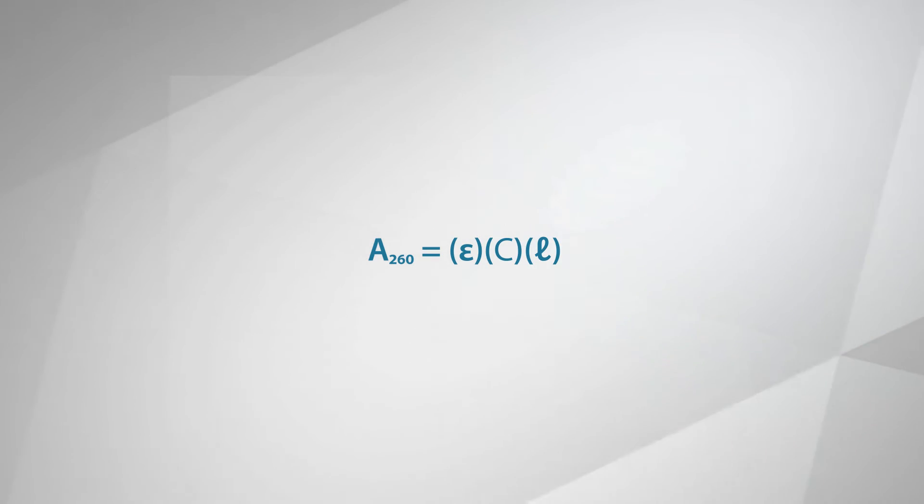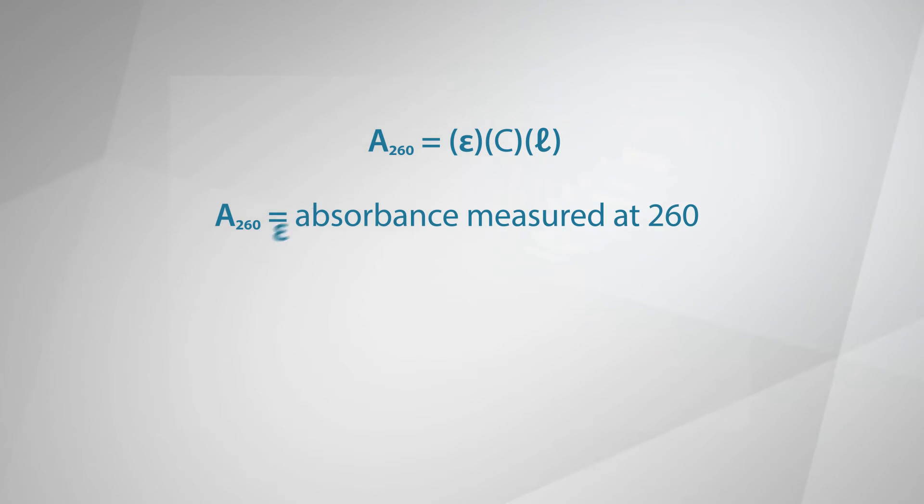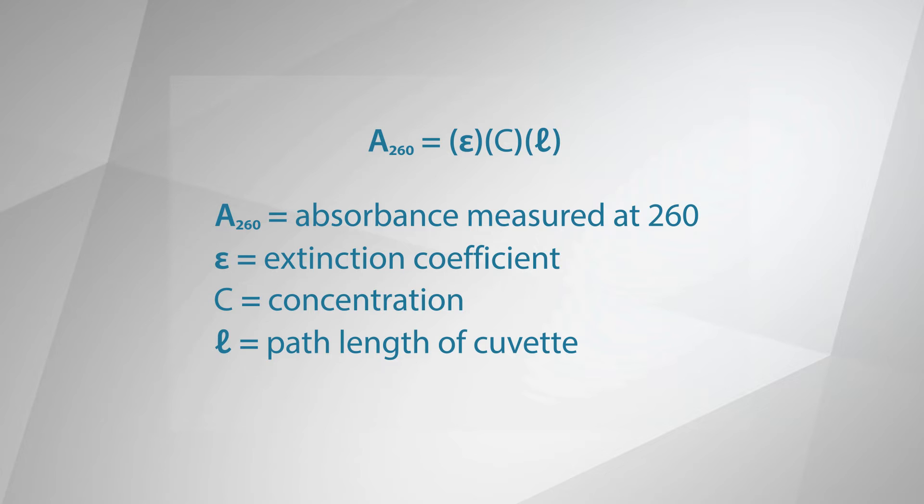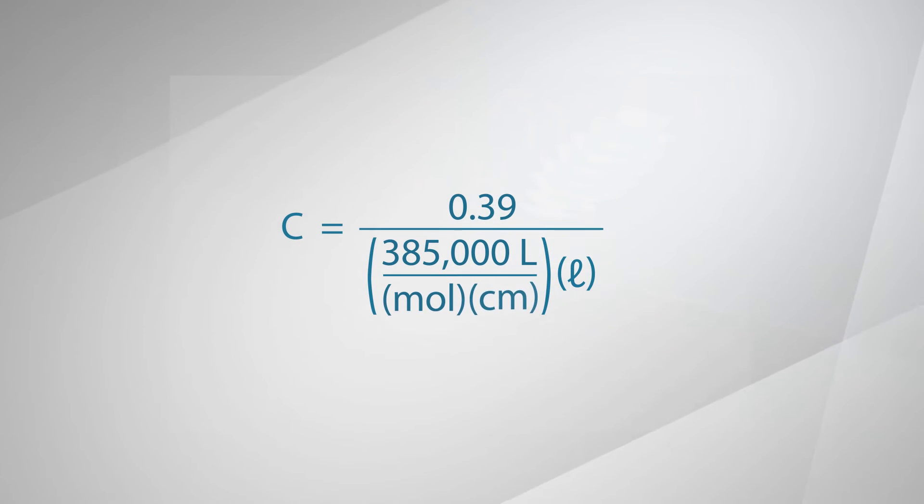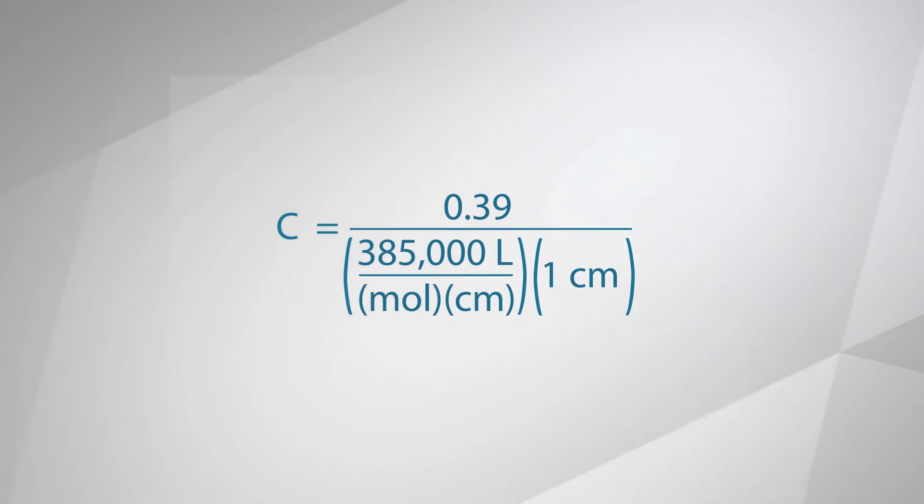The formula is: absorbance at 260 nanometers equals the extinction coefficient multiplied by the concentration and multiplied by the path length of the cuvette used for measurement. For the extinction coefficient of your RNA, check the product transfer form. Solve for concentration and then multiply by the dilution factor used in the measurement. In this example, the A260 is 0.39, the extinction coefficient is 385,000, and the path length is 1 centimeter.